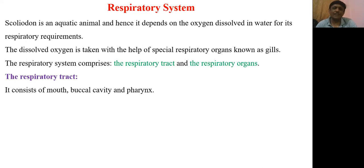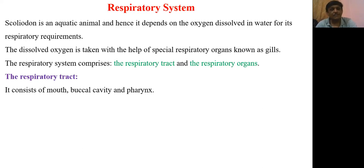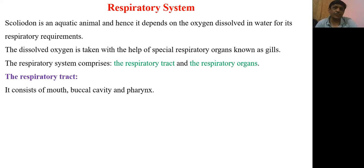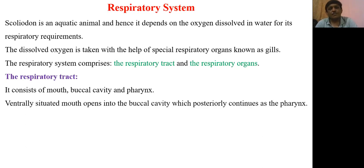As the animal is aquatic it is dependent on dissolved oxygen. It absorbs this dissolved oxygen through the specialized organ called gills. In our previous lectures we described that gills are present on the lateral wall of the pharynx, so a water current must be maintained through this lateral wall. The respiratory tract — the path of oxygen — goes through the mouth, then into the buccal cavity, and then the pharynx. The mouth, which is ventrally situated, posteriorly opens into the buccal cavity, which then continues posteriorly as the pharynx.